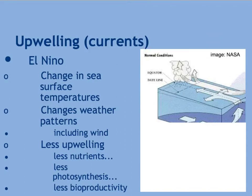A term you may have heard before is El Niño, and that actually has to do with upwelling — or the lack thereof — at certain times of the year due to certain pressure changes. During an El Niño year, there's a change in sea surface temperatures, which changes the weather patterns, including the wind. Because of that, there's less upwelling where there's usually a lot of upwelling, which means less nutrients, less photosynthesis, and less bioproductivity. So the areas that normally have very good fisheries and fishing industries end up with a very poor industry that year because of El Niño.